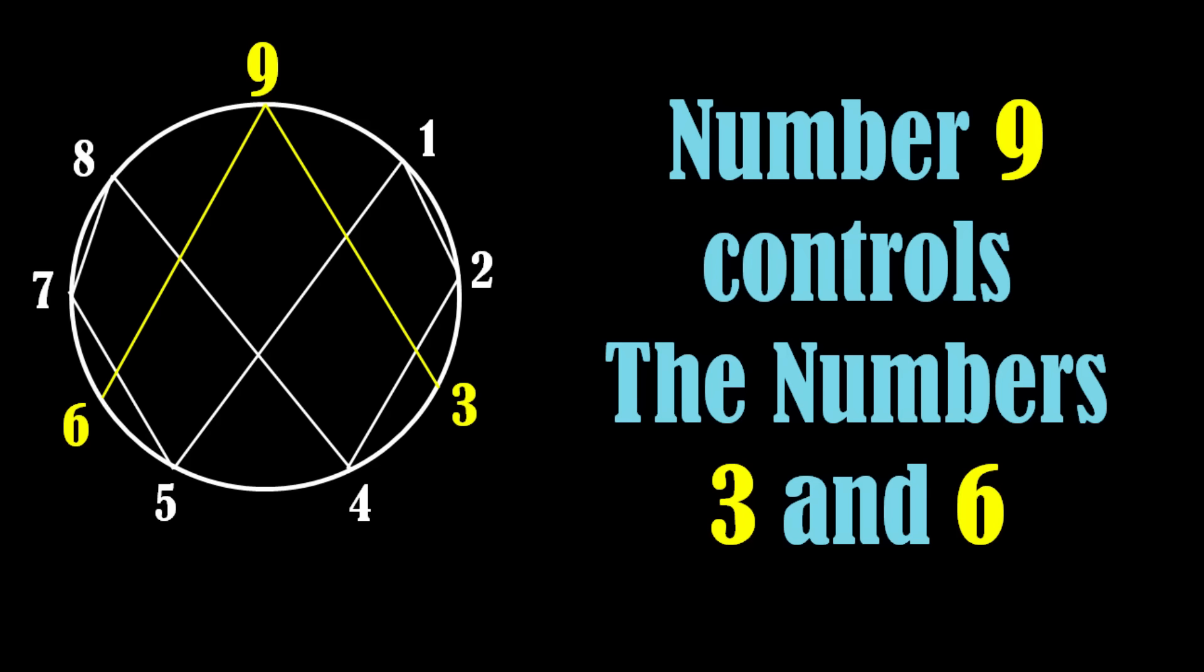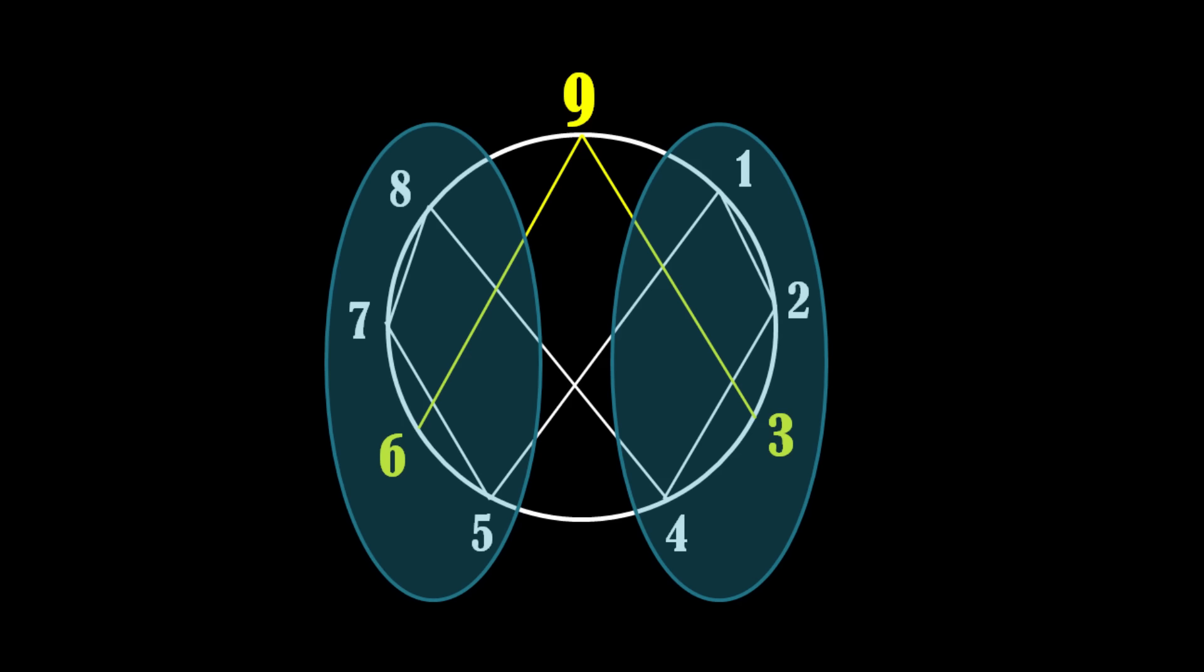Actually number 9 controls the numbers 3 and 6. And numbers 1, 2, 4 are controlled by number 3. While numbers 8, 7 and 5 are controlled by number 6. In this way, number 9 controls all the numbers.